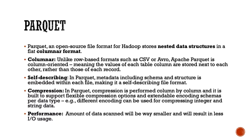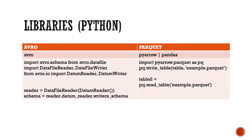In Parquet, compression is performed column by column, and it is built to support flexible compression options and extendable encoding schemas per data type. For example, different encoding can be used for compressing integer and string data. Parquet is a high-performance file format — the amount of data scanned will be way smaller and will result in less I/O usage. Both Avro and Parquet are well-supported in programming languages preferred by data scientists and data engineers, like Python and R. In this slide, we have a common library used in Python to read and write Avro and Parquet files respectively.